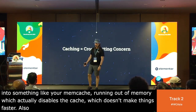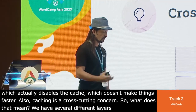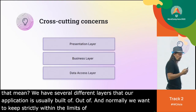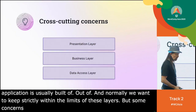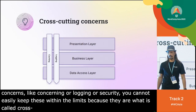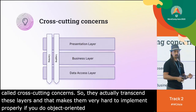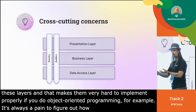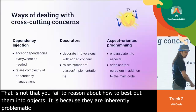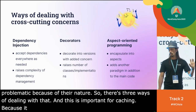Caching is a cross-cutting concern. We have several different layers our application is built out of, and normally we want to keep strictly within the limits of these layers. But some concerns like caching, logging, or security can't easily be kept within those limits — they are cross-cutting concerns that transcend these layers, making them very hard to implement properly. If you do object-oriented programming, it's always a pain to figure out how to best structure these — not because you fail to reason about it, but because they are inherently problematic by nature.